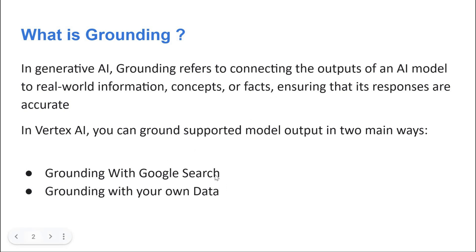In Google there are two types of grounding methods. First, grounding with Google Search: when you ask a question, if the model doesn't have the latest information, it sends the query to the Google Search engine, fetches the exact answer, and displays it to you. Second, grounding with your own data: if you need a chatbot that answers questions specific to your organization — information not publicly available on Google — you can ground it with your own private data.